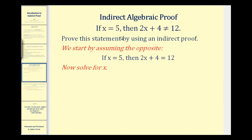We want to prove that if x equals five, then 2x + 4 cannot equal twelve. So by following the steps of indirect proof, we'll start by assuming that the opposite is true, meaning if x equals five, then 2x + 4 is equal to twelve.